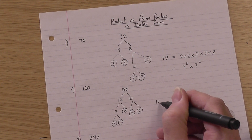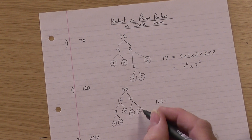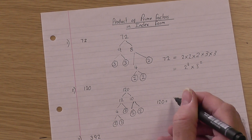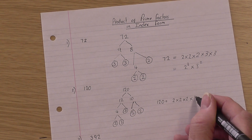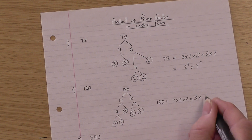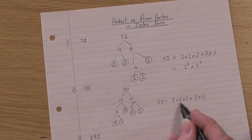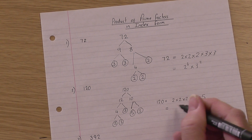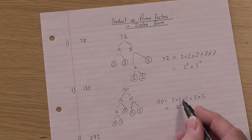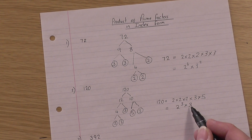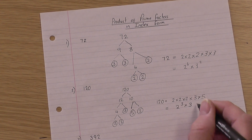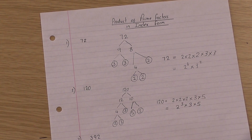Now the answer: 120 equals — taking the circled values — 2 times 2 times 2, three of them, times 3 times 5. In index form that's 2 to the power 3. There's only one 3, so you could write 3 to the power 1 but you don't need the power 1 — just write 3 on its own. Then times 5 to the power 1, or just 5. That's the answer to number 2.